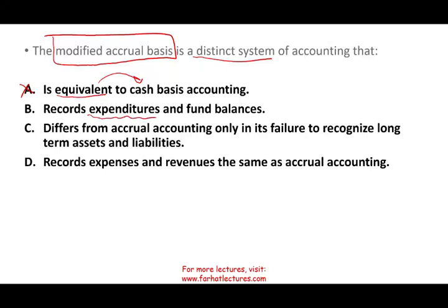We don't use the word 'expenses' in modified accrual — you need to know this. Option D says it records expenses and revenues the same as accrual. Because it uses 'expenses,' D is out immediately. And if it's the same as accrual, why would it be called distinct? So D is out, and we're down to 50-50.